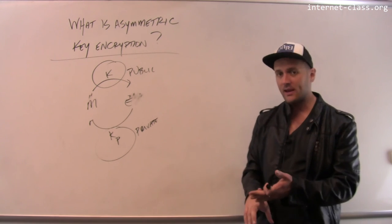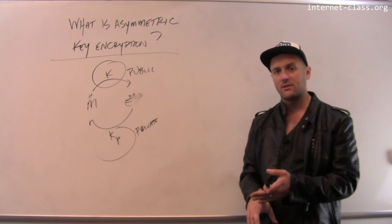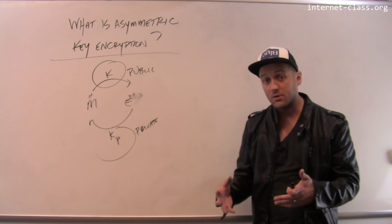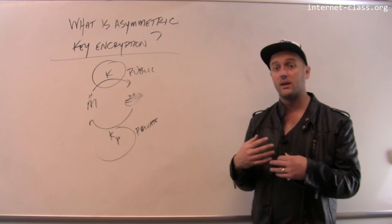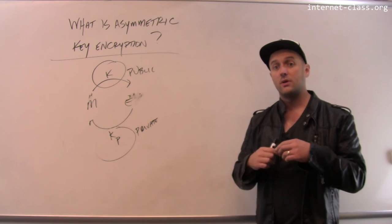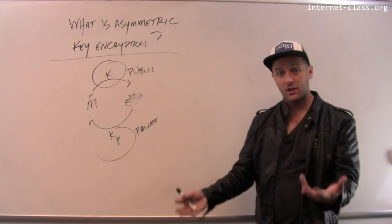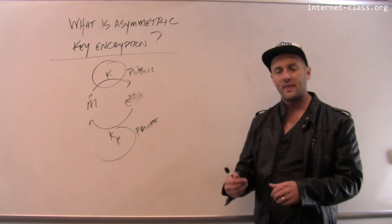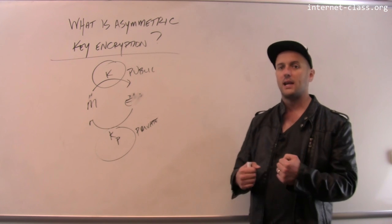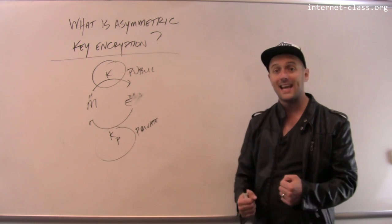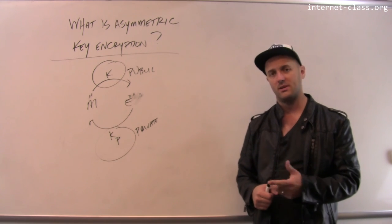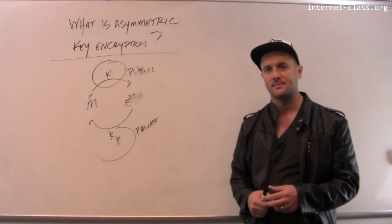Asymmetric encryption, based on the notion of a trapdoor function, makes it possible for two parties to initiate a secure conversation without having to agree on the shared key that you would need if you were using symmetric key encryption.